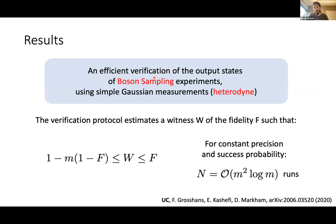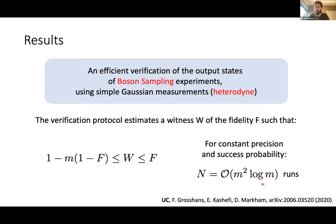The main result of our work is that obtaining these lower bounds on the fidelity can be done efficiently, giving an efficient verification of the output states of a boson sampling experiment using Gaussian measurements. The protocol estimates what we call a fidelity witness W — a tight lower bound on the fidelity. You can show that W is indeed a lower bound and becomes tight when fidelity is close to one. Importantly, you can obtain an estimate of this lower bound with a number of samples that scales as M² log M, where M is the number of modes — a dramatic improvement over exponential tomography scaling.